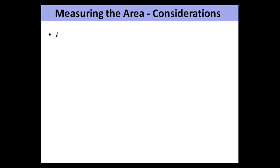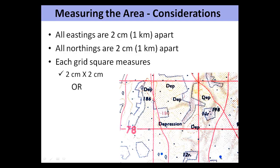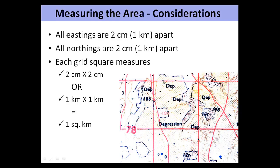We will now see the considerations for measuring area on a topographical map. First, all the eastings are 2 cm and 1 km apart, and all the northings are 2 cm and 1 km apart. As you can see on the screen, there is a map extract showing a block of 2 × 2 cm or 20 × 20 mm. This block represents 1 km × 1 km, or 1 km². The map scale of 2 × 2 cm accommodates the information of 1 km² of ground.